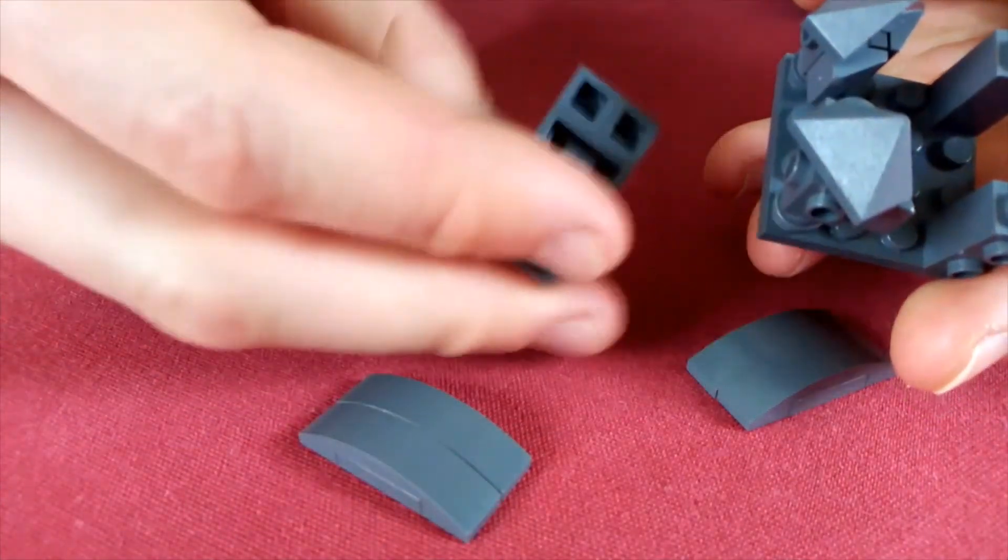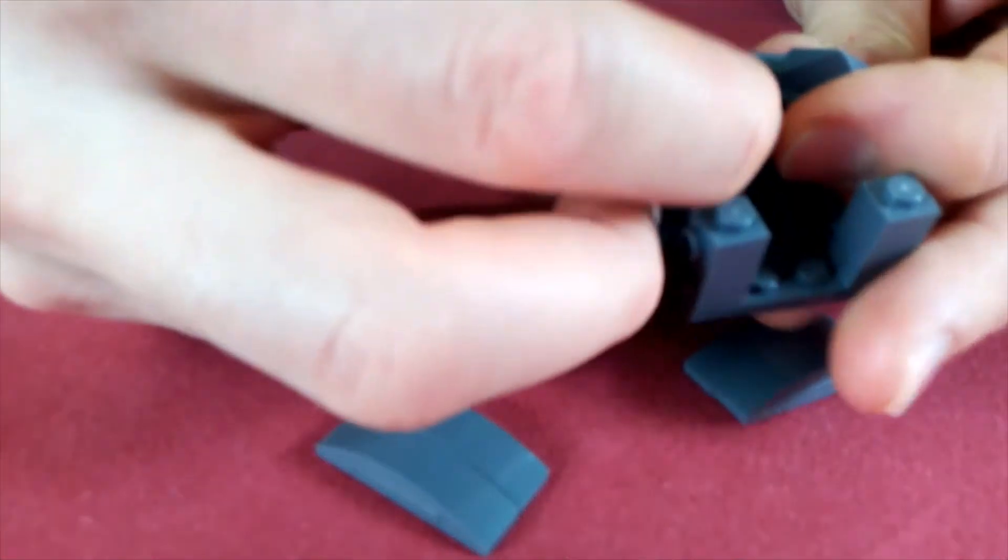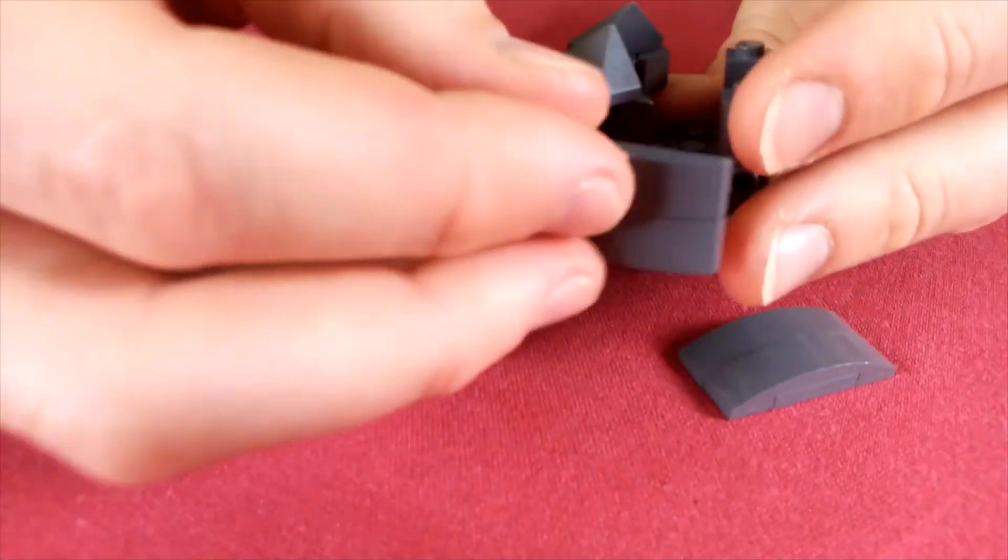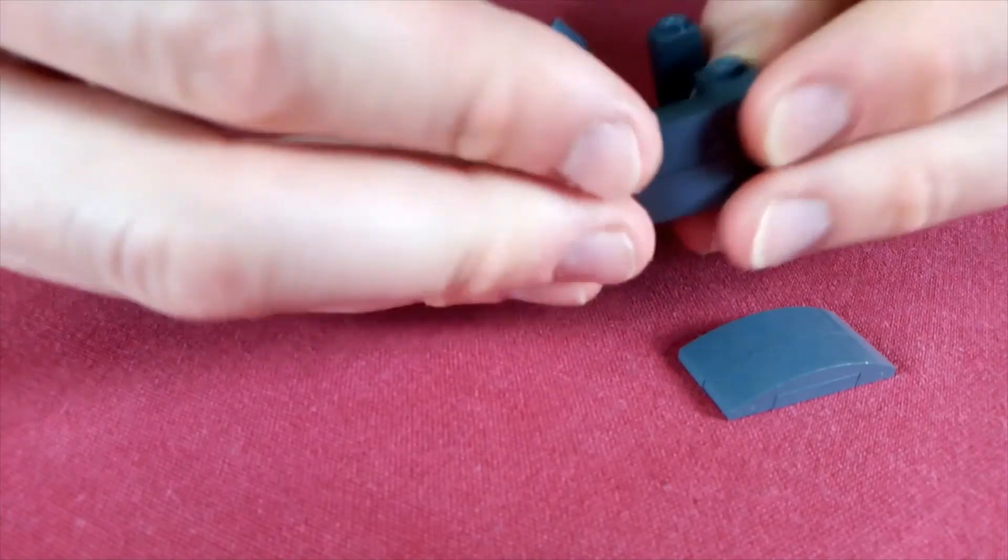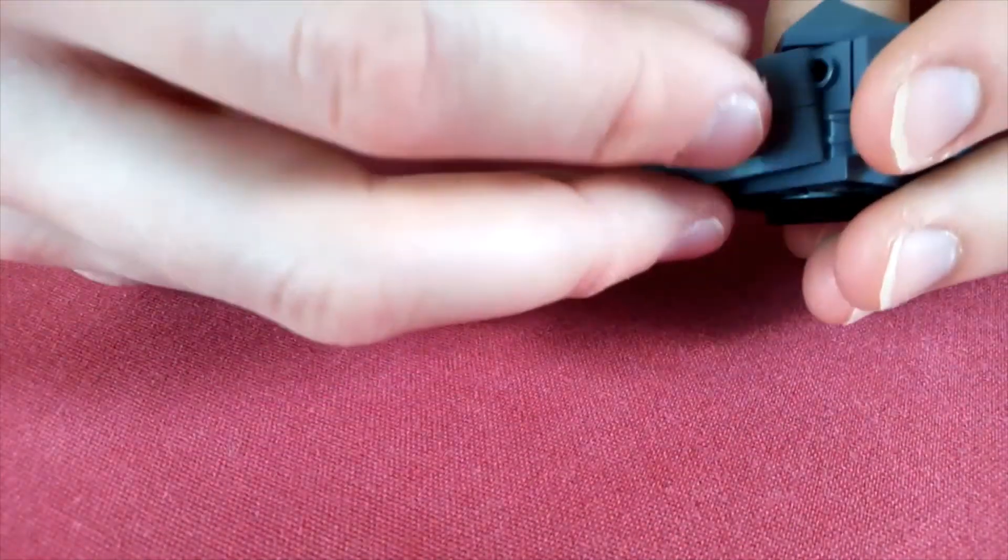Now take your first side piece and put it on the front of the turret just like that, and then your remaining two pieces go on the other sides just like this.